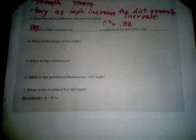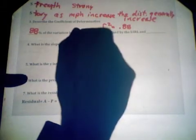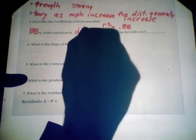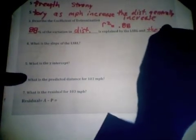An official way to actually say it on the exam is to say that 88 percent of the variation in the y value, in the distance, is explained by the least squares regression line and the speed of the golf ball.